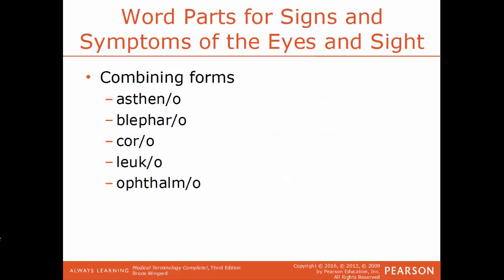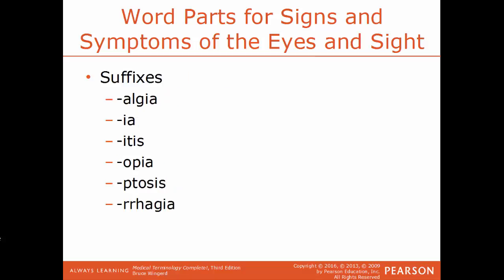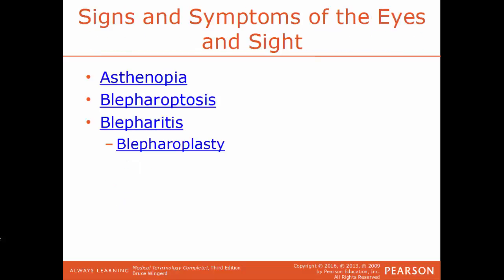Now we'll talk about some word parts for signs and symptoms, focusing first on the eyes and sight. Common combining forms include: asthen/o — a lack of strength; blephar/o — the eyelid; cor/o — the pupil; leuc/o — white; and ophthalm/o — the eye. Common suffixes include: -algia — pain; -ia — a condition; -itis — inflammation of; -opia — a vision condition; -ptosis — a drooping or sagging; and -rrhagia — a bursting forth of blood.